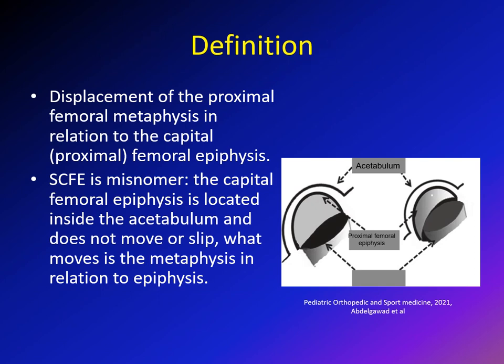So what is slipped capital femoral epiphysis? It means displacement of the proximal femoral metaphysis in relation to the capital epiphysis — the upper epiphysis. The metaphysis displaces in relation to the epiphysis. That's why the name is actually a misnomer: the capital femoral epiphysis does not move; it stays in the acetabulum. What moves is the metaphysis in relation to that epiphysis.